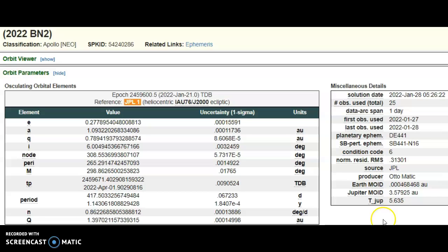The condition code is, well, six, which is not as bad as nine. Nine being highly uncertain, zero being good as far as the orbit. They've only been able to use 25 observations over less than a one day period to come up with their orbit.